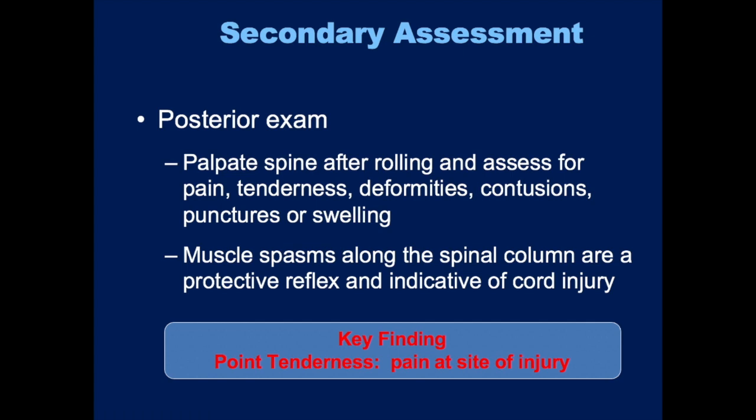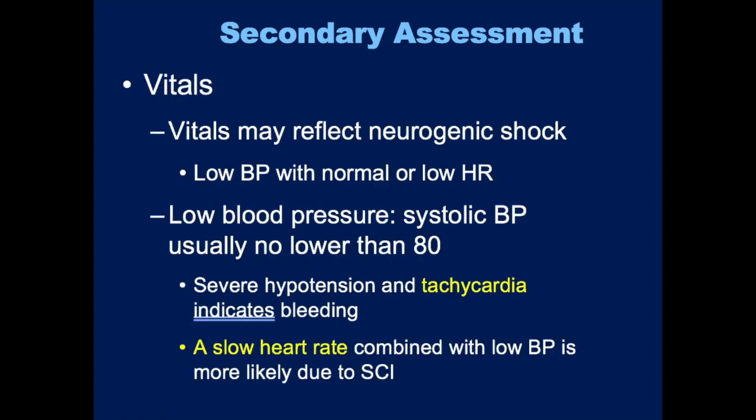Always get good baseline vital signs. You're always looking for signs of neurogenic shock — the loss of all sympathetic stimulation, dilation of the arteries, and the inability of the heart rate to increase. As a result, you get low blood pressure and a normal or low heart rate. That's the hallmark of neurogenic shock — low blood pressure and a normal to low heart rate. The low blood pressure usually isn't super low — usually no lower than 80.